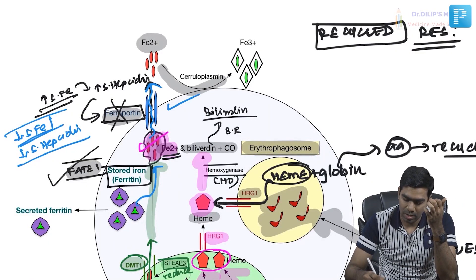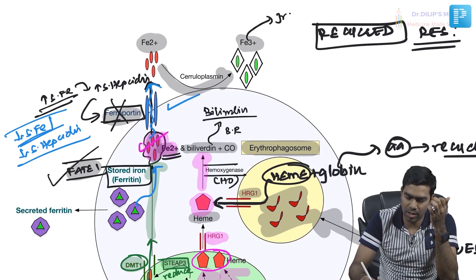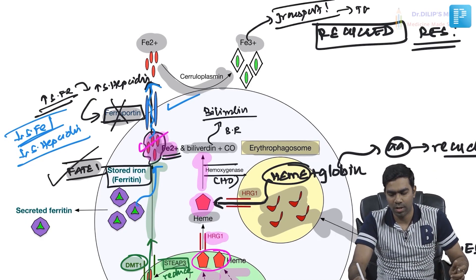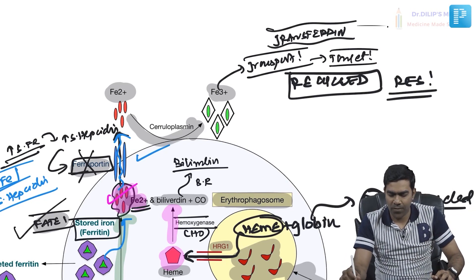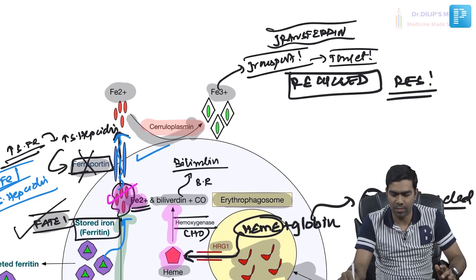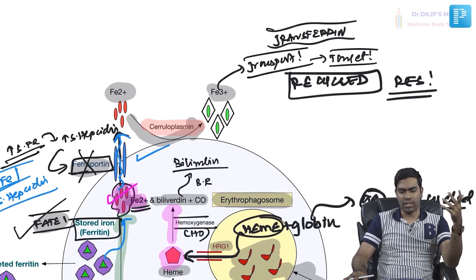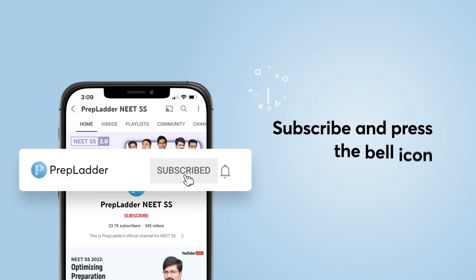Once Fe2+ comes out of the RES via ferroportin, it must be converted to Fe3+ for transport to target tissues, since only Fe3+ can be loaded onto transferrin. This oxidation of Fe2+ to Fe3+ is carried out by ceruloplasmin, which acts as a ferroxidase — similar to hephaestin seen in intestinal iron absorption. Fe3+ is then loaded onto transferrin and transported to target tissues. This is how iron recycling happens in the RES.